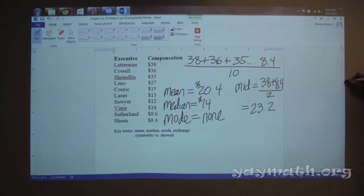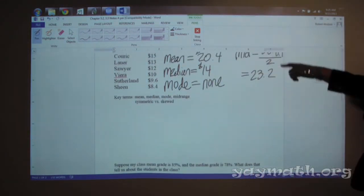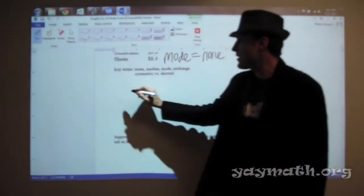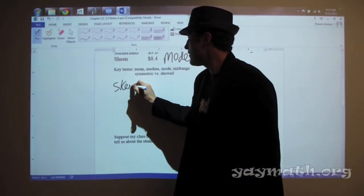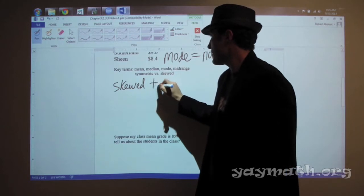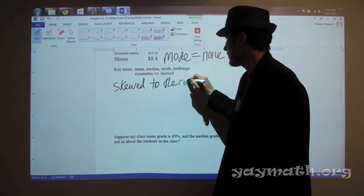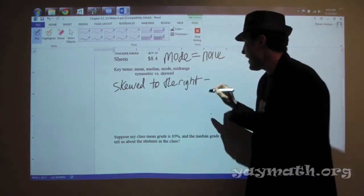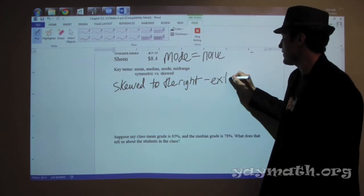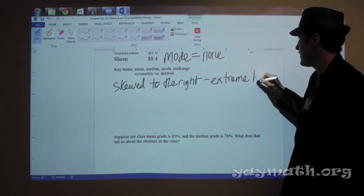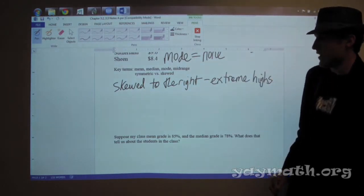High numbers. So, this is what happens. We call this, this data, these are good terms, skewed to the right. Extreme highs. I'll show you why. Because like on a number line? Yeah, extreme highs. Like on a number line.